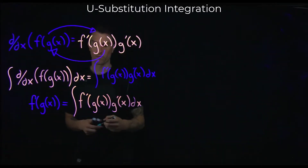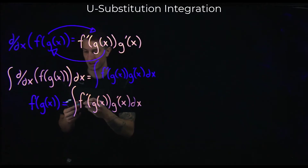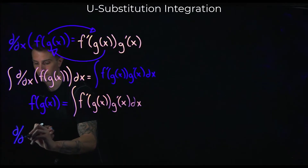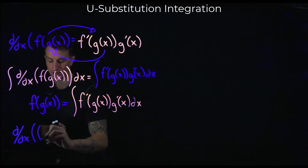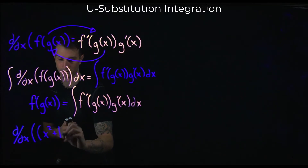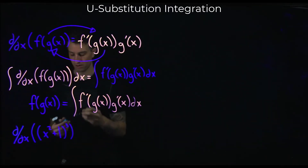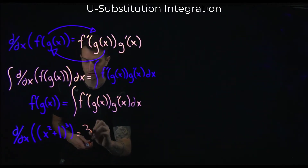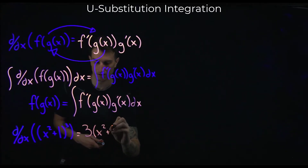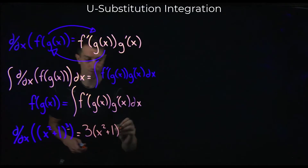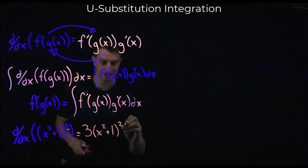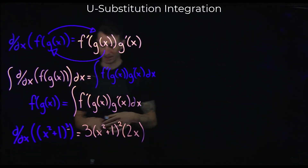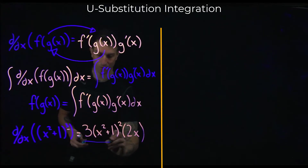Let's write down an example by taking the derivative, and then we'll work on the integral of (x² + 1)³. If I take the derivative, I have a chain rule: the 3 comes down in front, the inside stays the same, and the derivative of the inside is 2x. So we end up with 3 times (x² + 1)² times 2x.